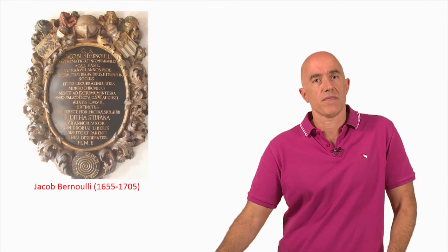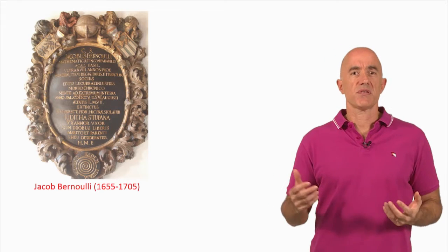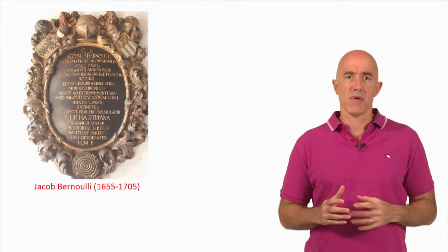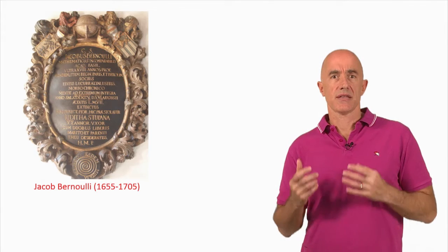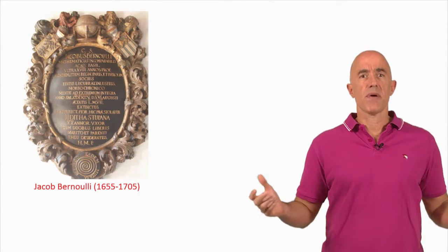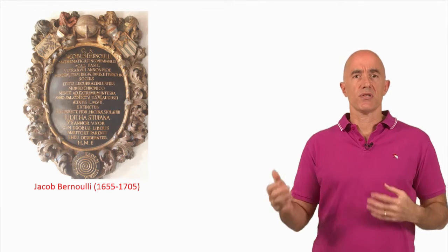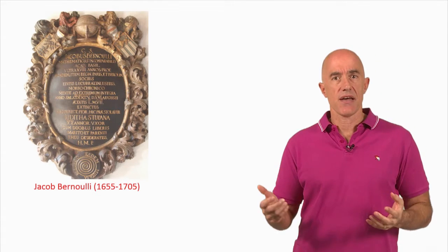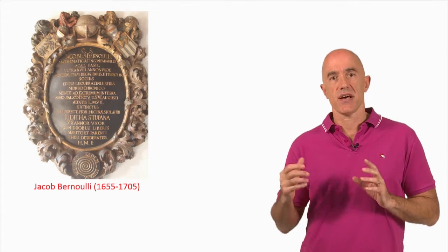Jacob Bernoulli apparently had a somewhat mystical fondness for the logarithmic spiral. He wrote — in English translation — that the logarithmic spiral may be used as a symbol either of fortitude and constancy in adversity, or of the human body, which after all its changes, even after death, will be restored to its exact and perfect self.